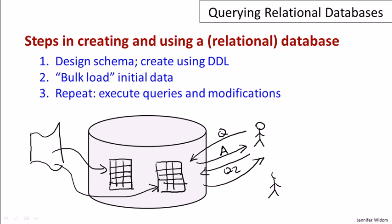The same human or maybe a different human might ask to modify the database. So they might want to insert new data or update some of the data. The database will come back and say, okay, I made that change for you. So that's the basic paradigm of querying and updating relational databases.